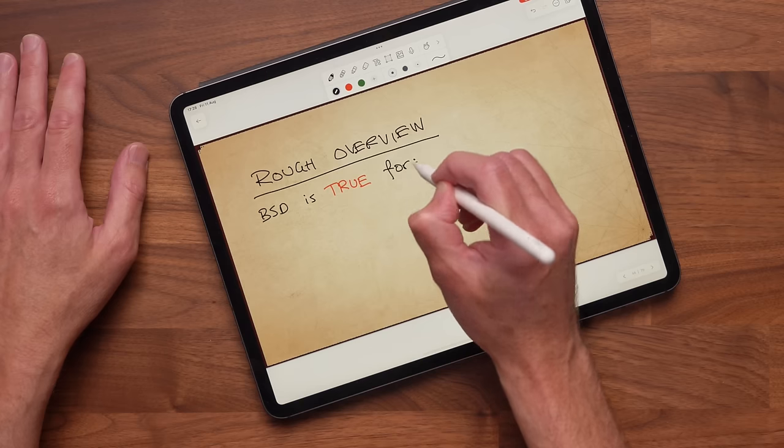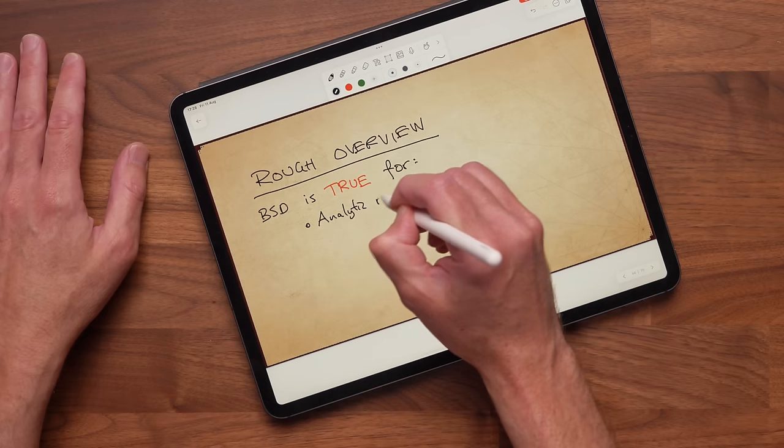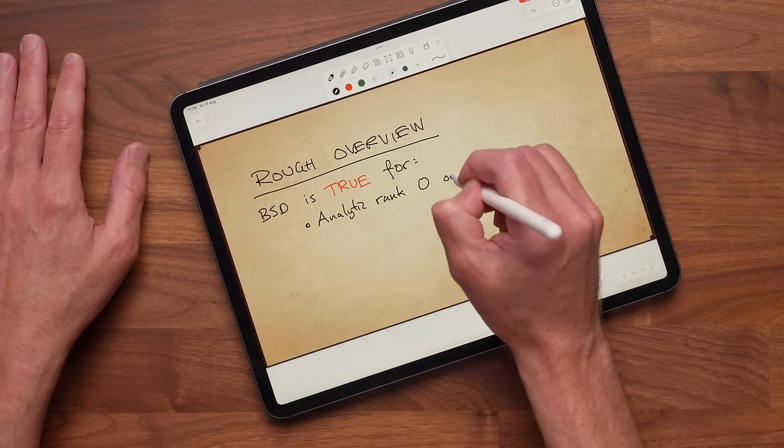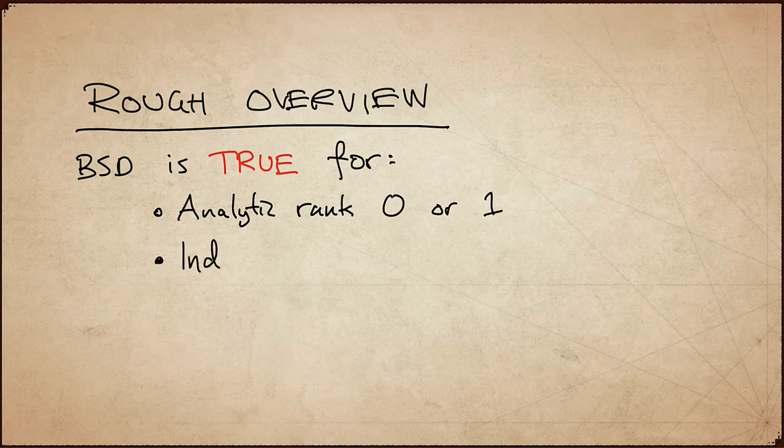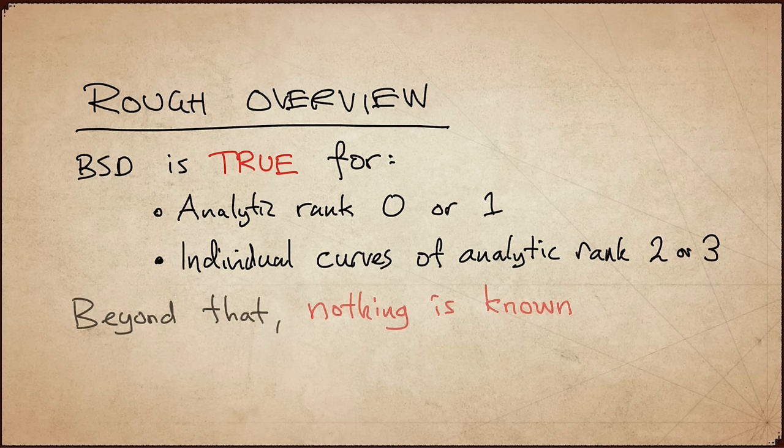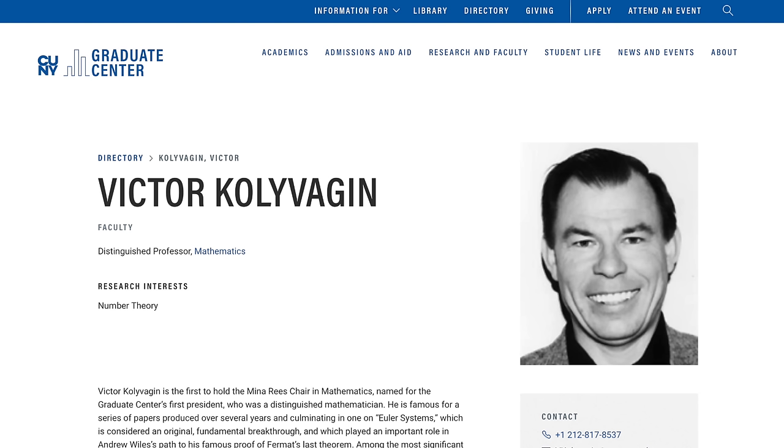What is known about BSD? A rough overview is that the BSD conjecture is known to be true for all curves of analytic rank 0 or 1, and also for some individual curves of analytic rank 2 and 3. For curves of high rank, nothing is known. Analytic rank 0 and 1, that was proved by some incredibly deep work, mostly by Viktor Kolyvagin. And this is how happy you are if you can prove part of the BSD conjecture.